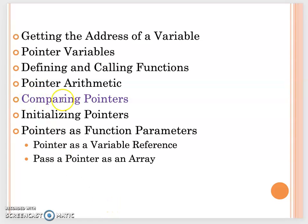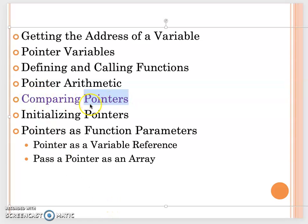Let's continue to talk about pointers. We will talk in more detail about how to compare pointers and what we should be careful about when we initialize pointers. And at the end, we can pass a pointer as a function parameter. We use two different ways — sometimes using a pointer just as a variable reference, and sometimes passing a pointer just like an array.